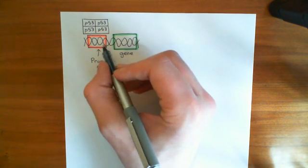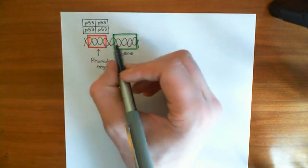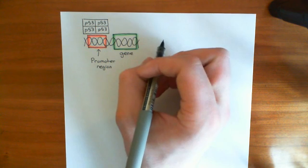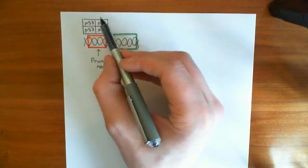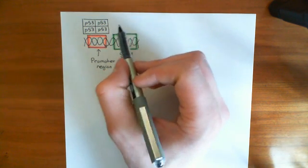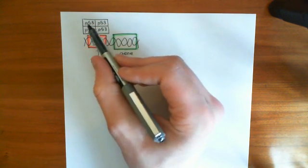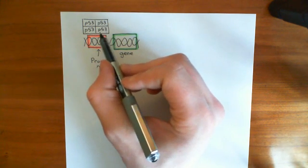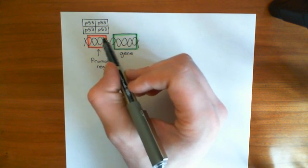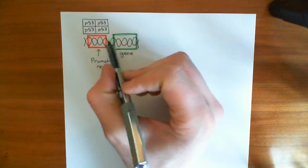So if the promoter region has a higher affinity for binding RNA polymerase, then RNA polymerase will bind more often and you'll get more mRNA being produced for this gene. And therefore, if you get more mRNA being produced, you'll get more protein being produced. So by controlling the affinity of this promoter region for the RNA polymerase, you can control the amount of the gene that you actually express. So basically, this tetramer of P53 is going to come and bind to certain promoter regions and what it's going to do is it's going to increase the affinity of that promoter region for RNA polymerase.